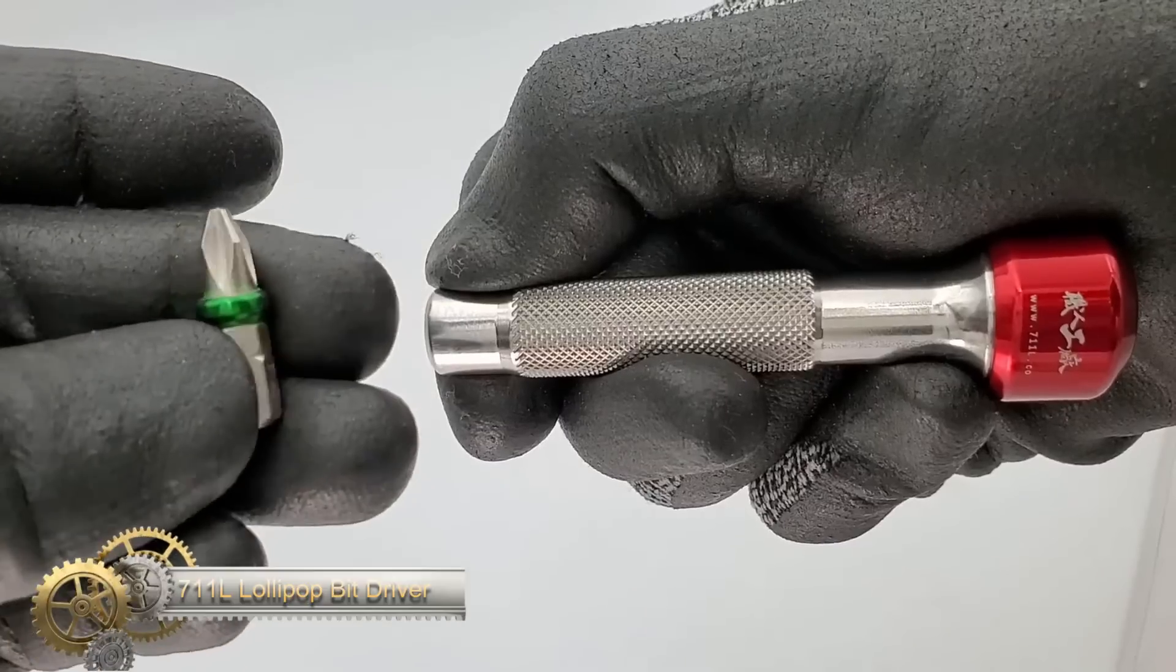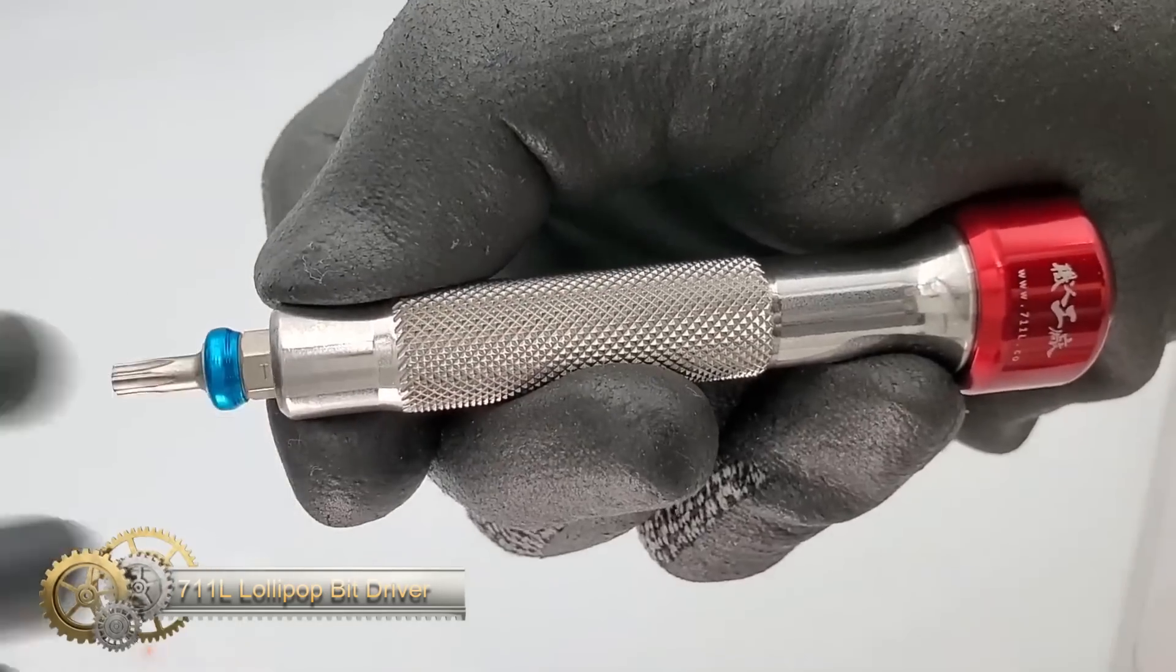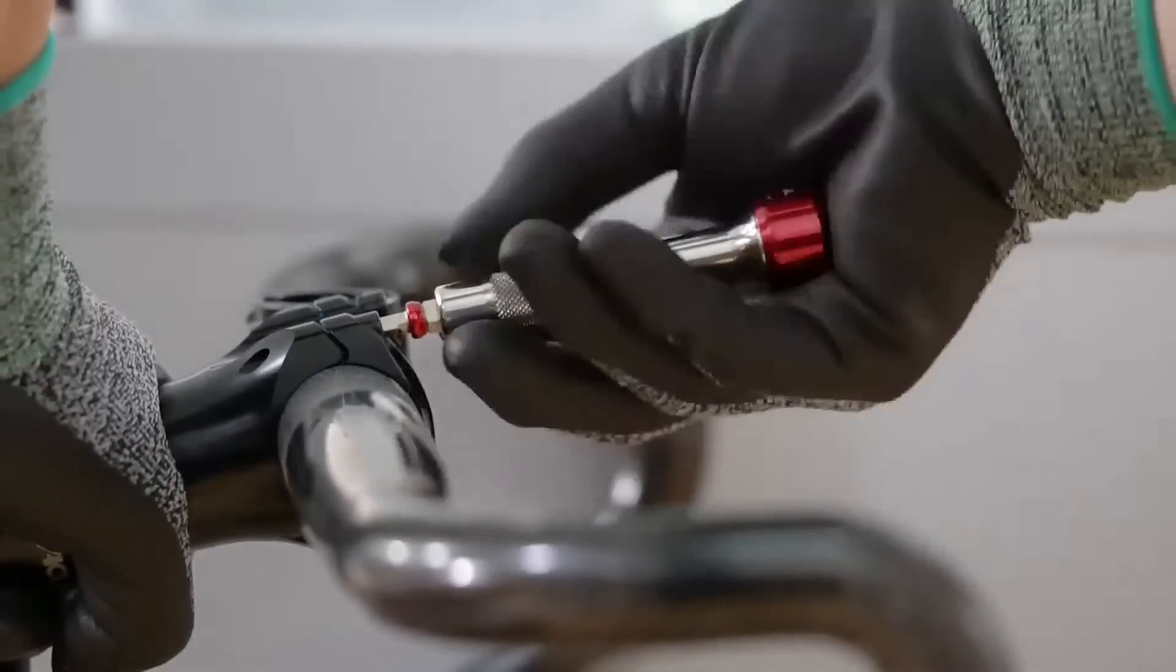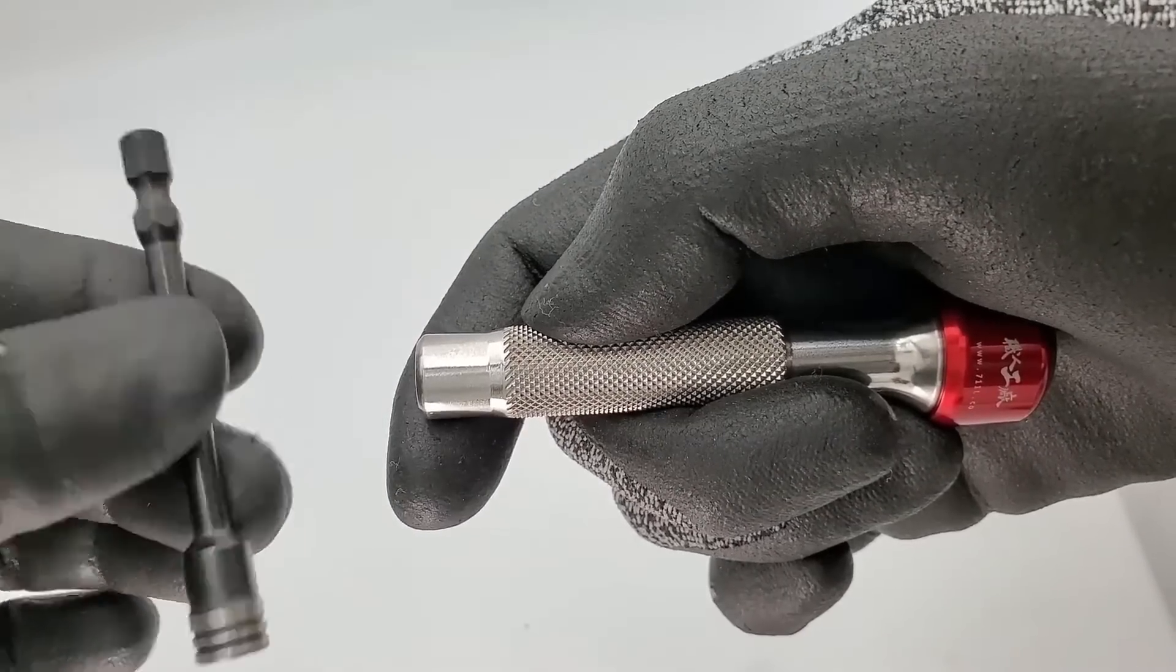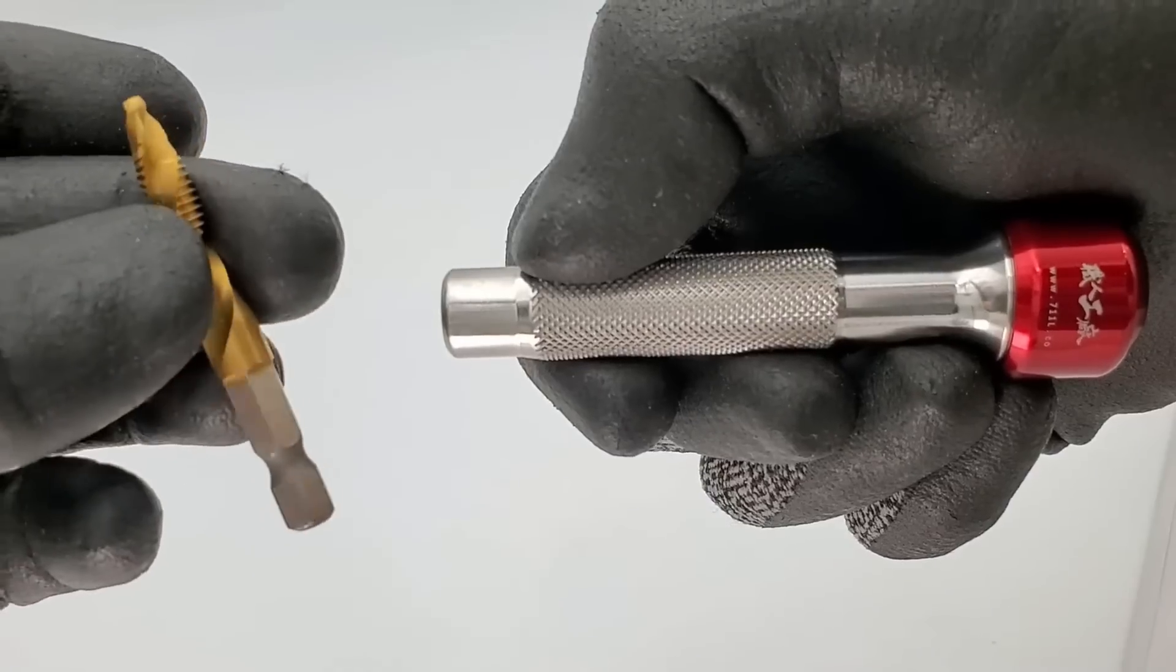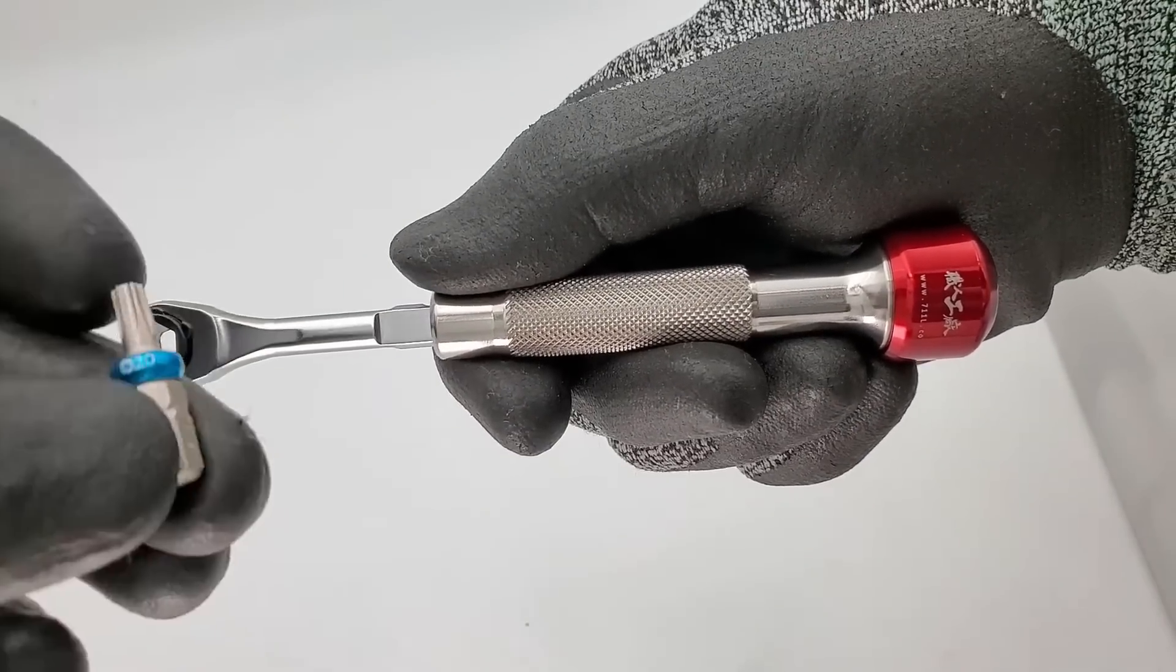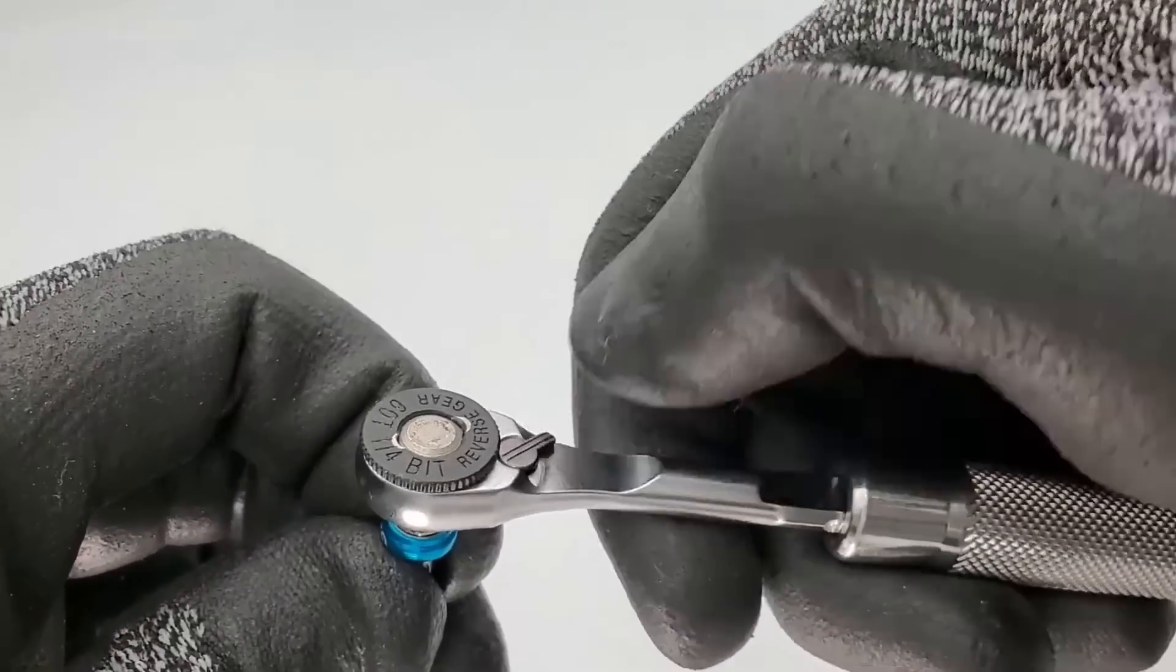The 711 plonk length lollipop bit driver is a versatile and durable tool designed for driving screws and bolts with hexagonal heads. Its unique lollipop-shaped handle provides a comfortable grip and easy rotation during use. Made from high-quality materials like hardened steel, it is strong and durable enough to withstand heavy use. The magnetic tip securely holds the bit in place, making it a valuable tool for smaller screws and tight spaces. Its compact size makes it portable, and it is commonly used in DIY projects, construction, and automotive repair.